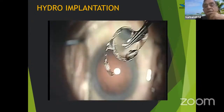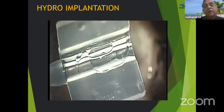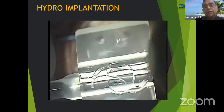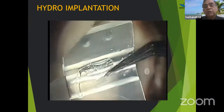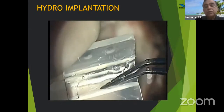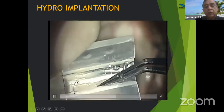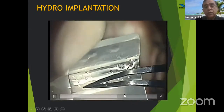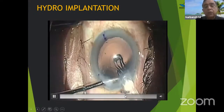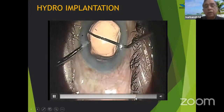Use Healon GV or do hydro-implantation during surgery. Do not use methylcellulose because it cannot be completely removed from the capsular bag. If you use Healon GV, it comes out completely; with methylcellulose, it remains and increases post-op rotation chances. I found this when using the Star toric IOL which I imported long ago, even before Alcon manufactured toric IOLs — significant rotation occurred in patients where we used methylcellulose. So I stopped using methylcellulose entirely.